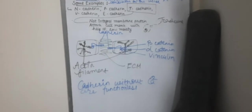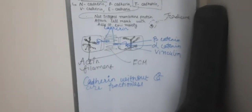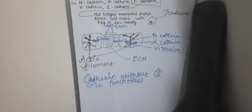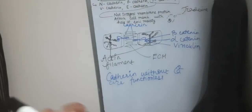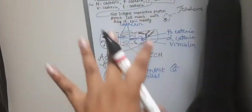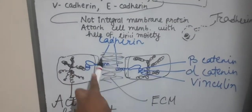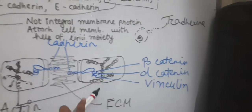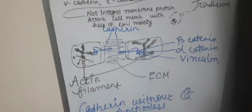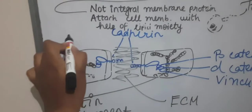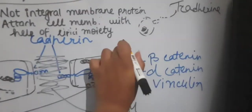Now we will understand in general how do cadherins work. This is a very easy way and forgive me for my drawing because it's not very good, but at least you'll understand it this way. So this one and this one, these are both cells.